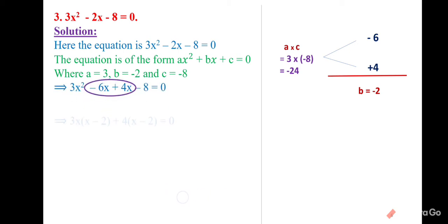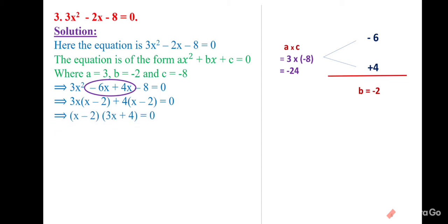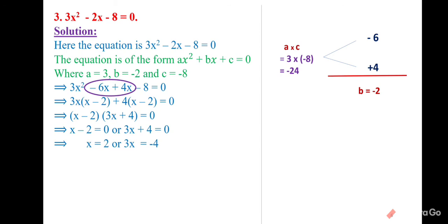Taking common from the first two terms: x(x − 2). From the last two terms: 4(x − 2) would be common. The bracket (x − 2) is the same. So (x − 2)(3x + 4) = 0. Setting each bracket to zero and applying the linear equation concept gives x = 2 and x = −4/3 as the solutions.